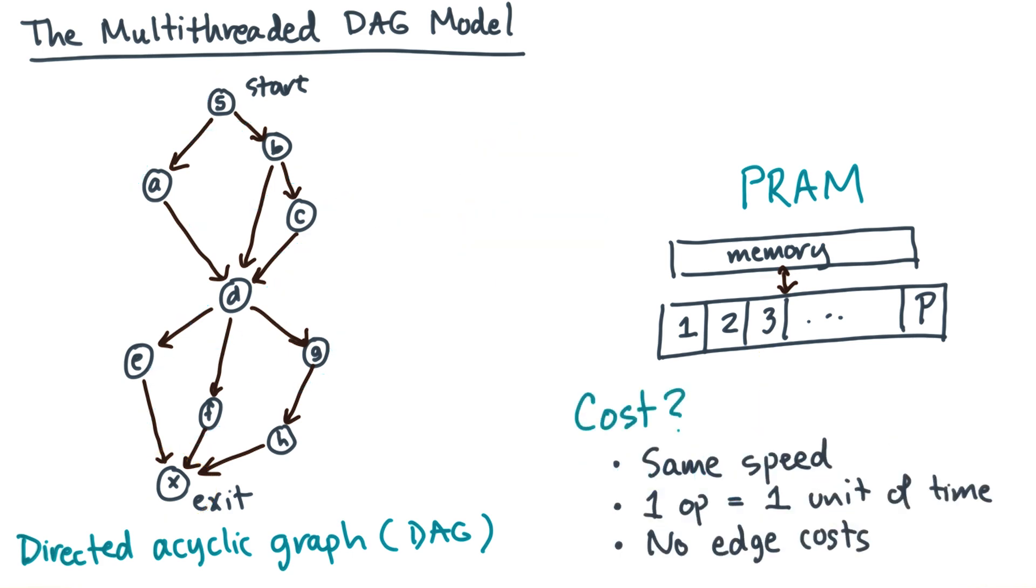Given a DAG and a PRAM, here's a question. How long will it take to run the DAG? To answer this question, you need a cost model. For now, I'm going to use a cost model that makes three assumptions.